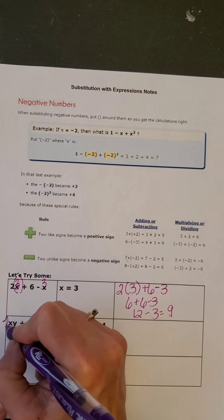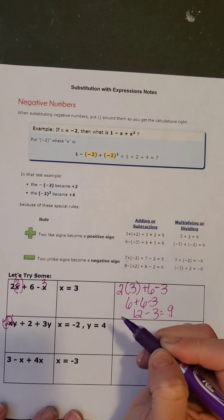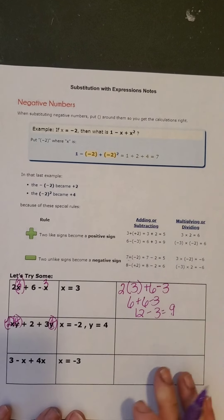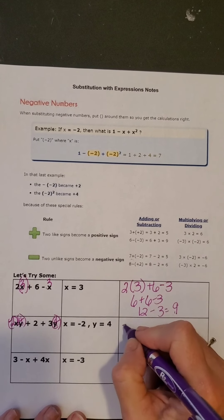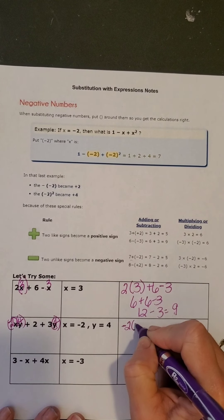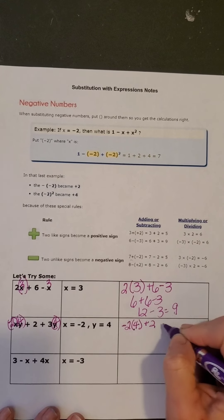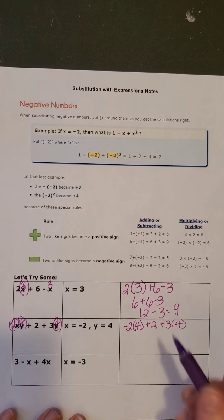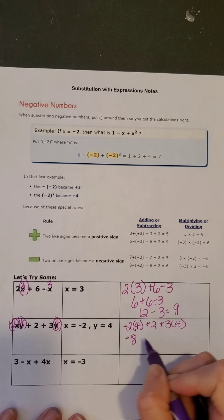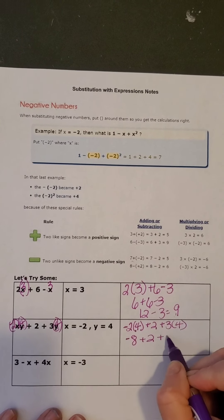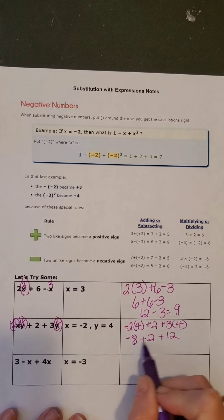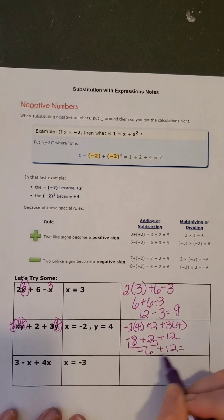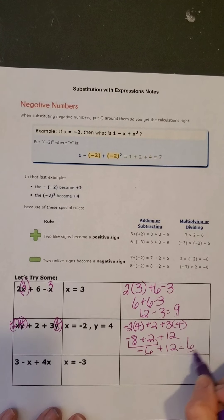x is negative 2, y is 4. I put my values in over here and now I'm going to come over here and write it. Negative 2 times 4 is negative 8 plus 2 plus 12. Negative 8 plus 2 is negative 6 plus 12. Negative 6 plus 12 is a positive 6.